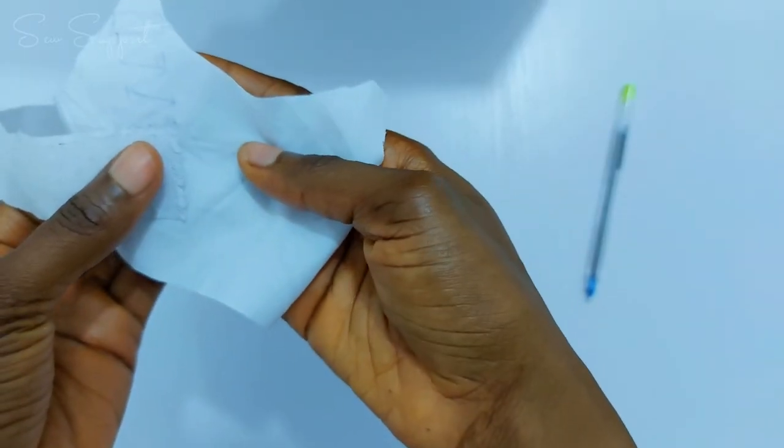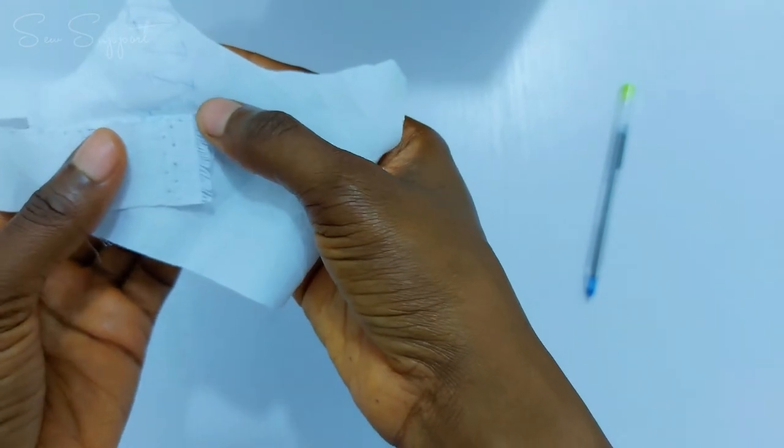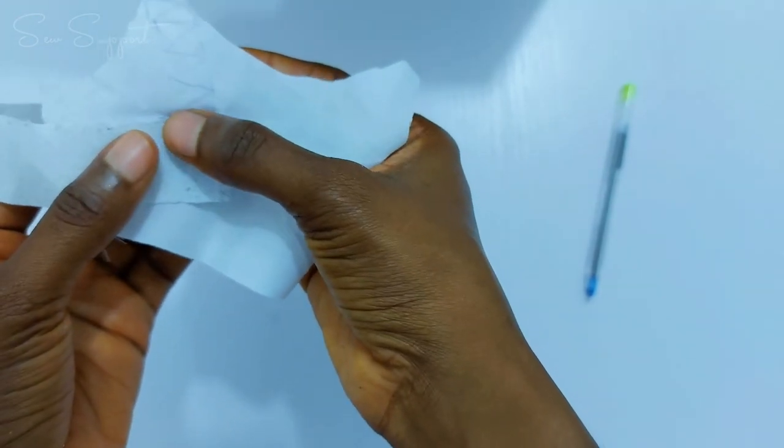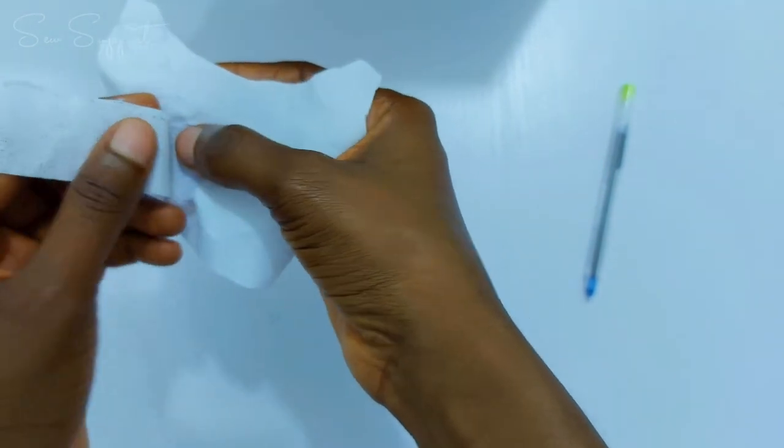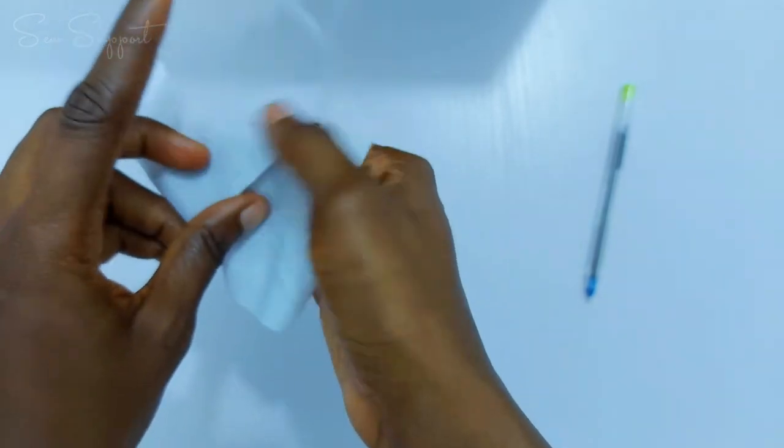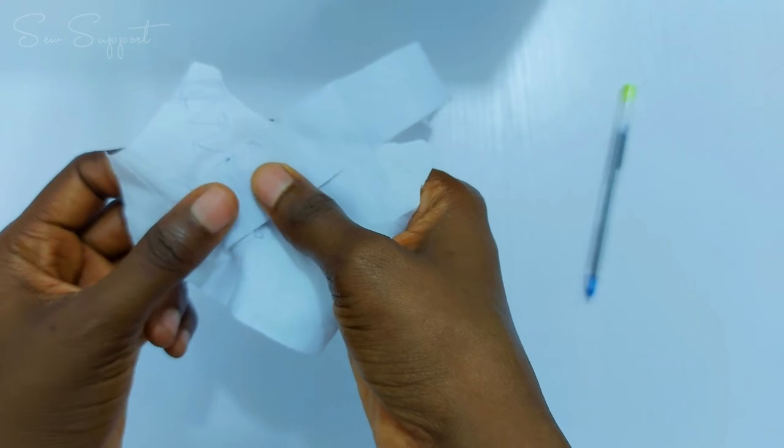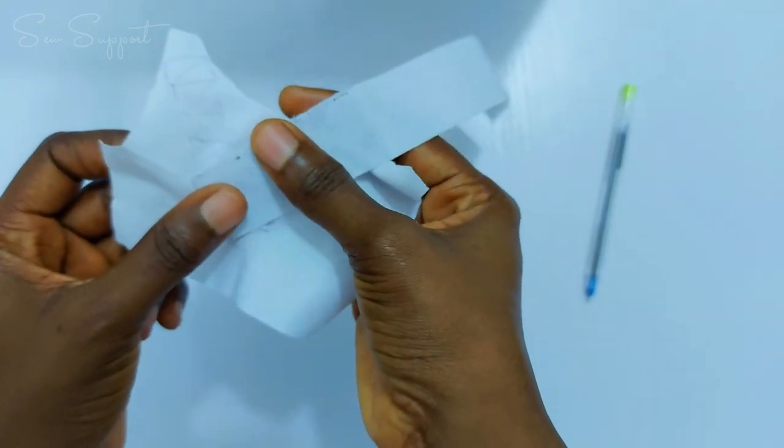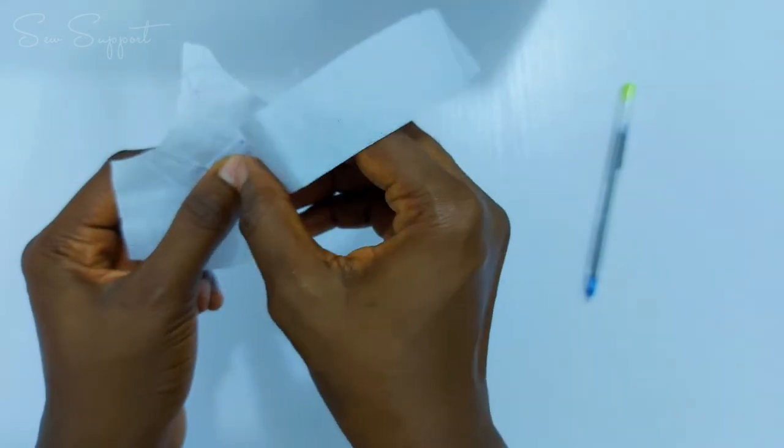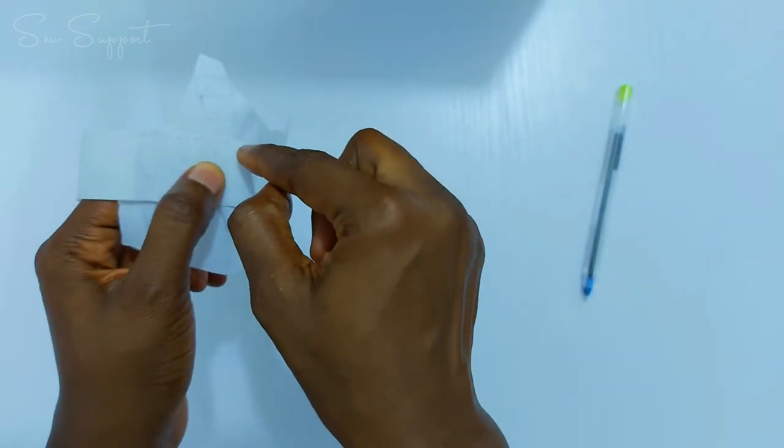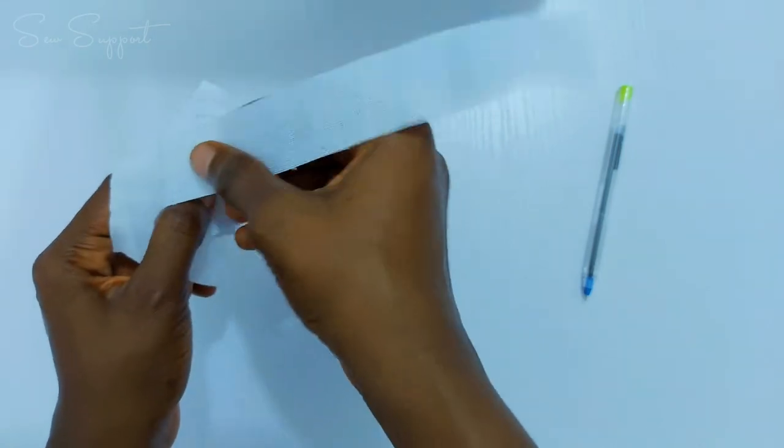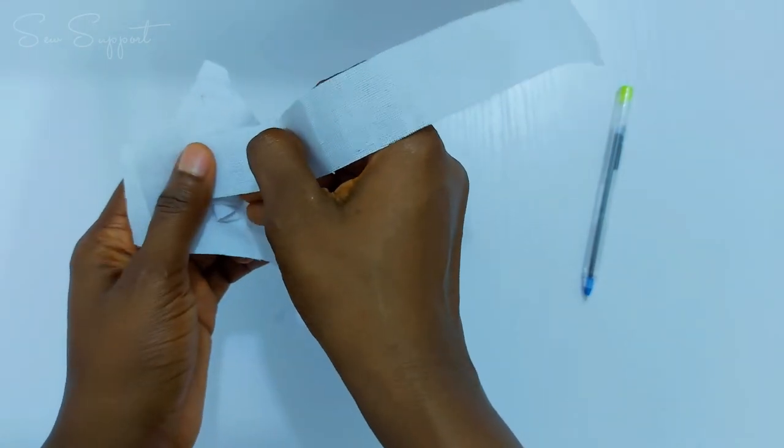You start here and you sew from here to where the zigzag stops, then you fold along the line that you've already drawn and then you sew. Fold again and you sew. So you continue like that all the way to the top.